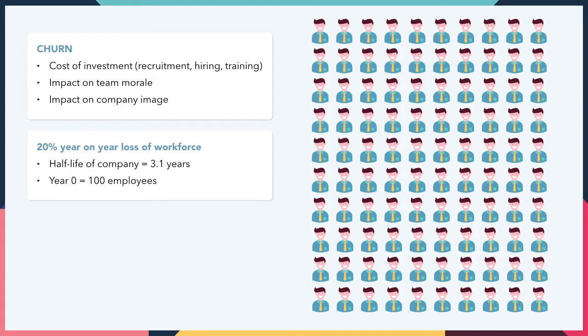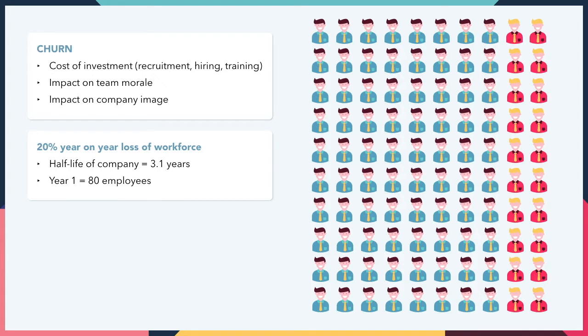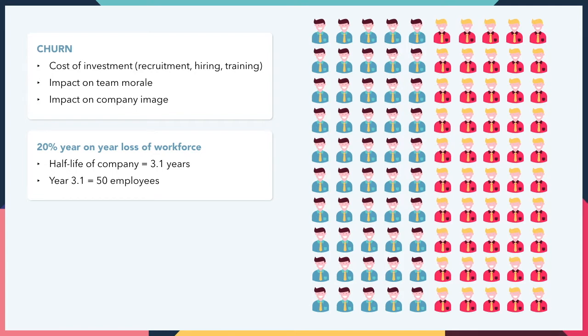That means that if you start your company with a hundred employees, after one year you will be left with 80 employees, after two years 64 employees, and after 3.1 years only 50 employees — that is half of your workforce.